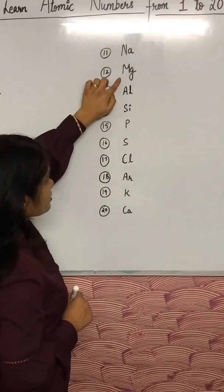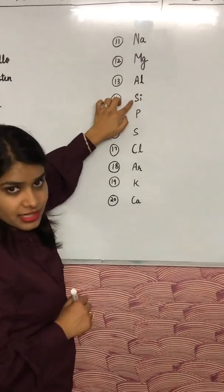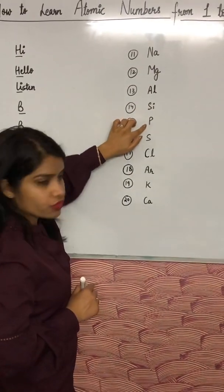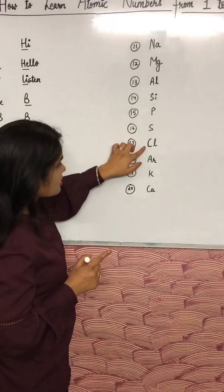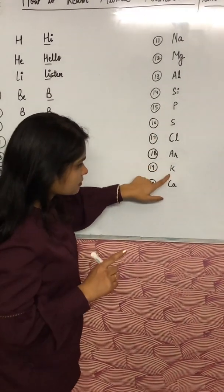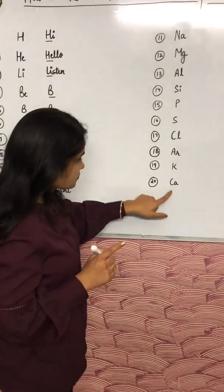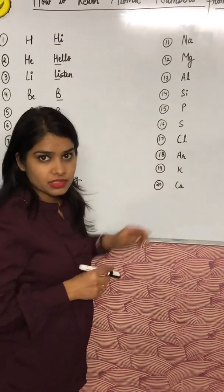Mg magnesium, Al aluminium, Si silicon, P for phosphorus, S for sulfur, Cl chlorine, Ar argon, K for potassium, Ca calcium.